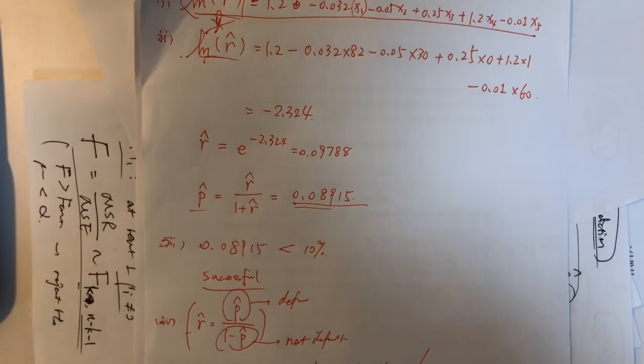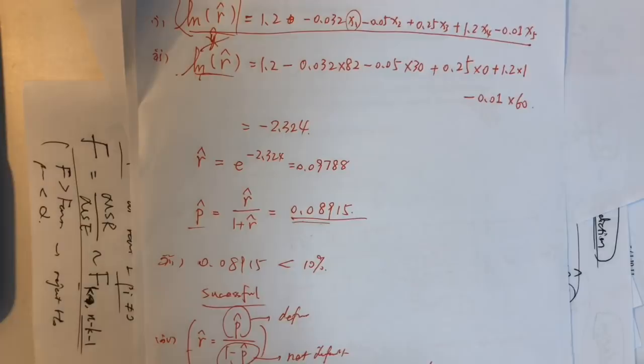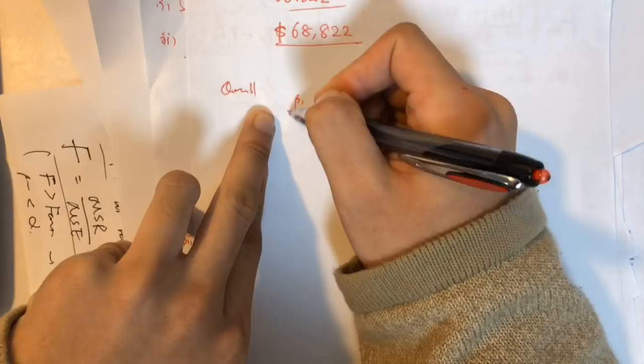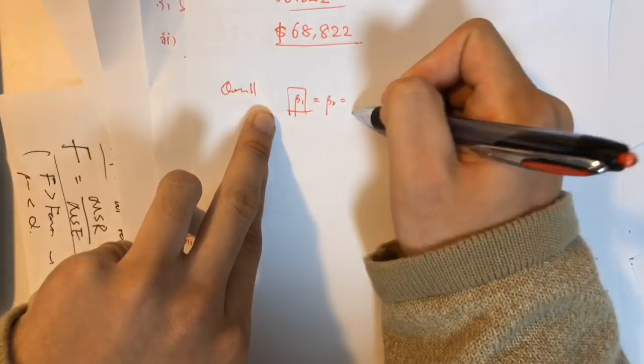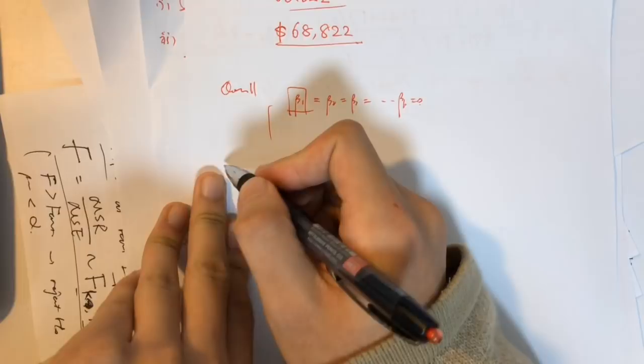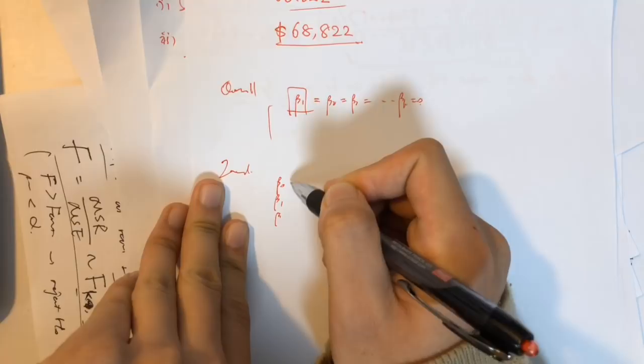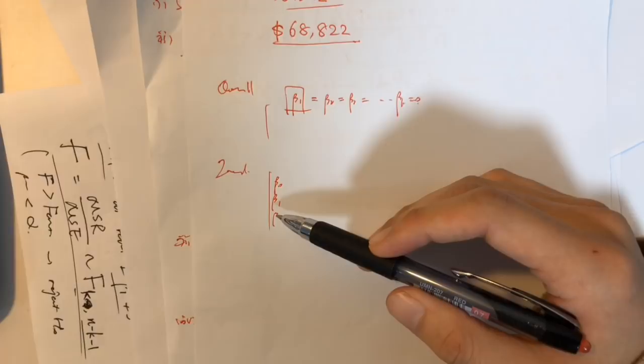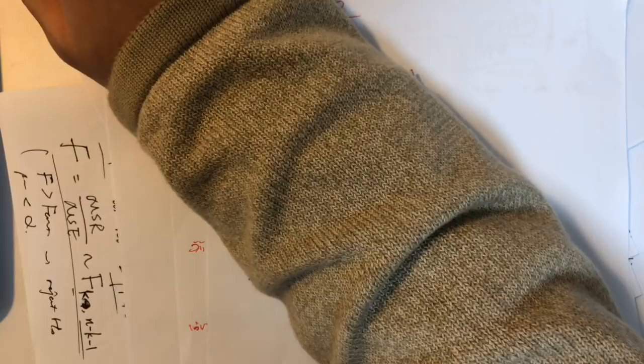For the overall significance test, we test whether beta one through beta k all equal zero — the coefficients on all independent variables — but we do not include beta zero. For individual tests, you can test any coefficient, including beta zero, beta one, beta three, etc. That is the key difference.